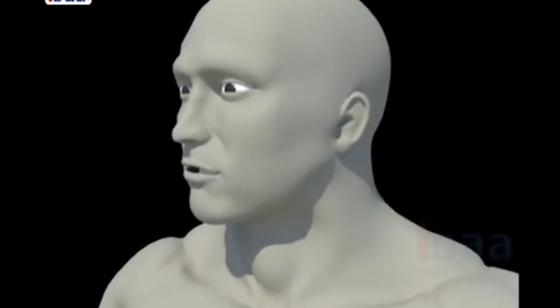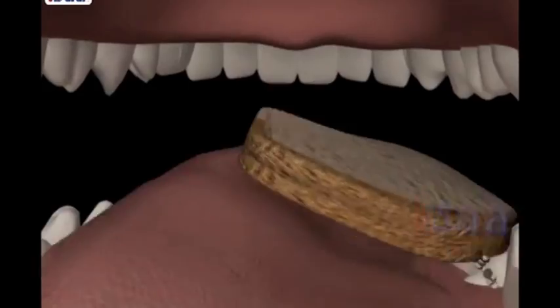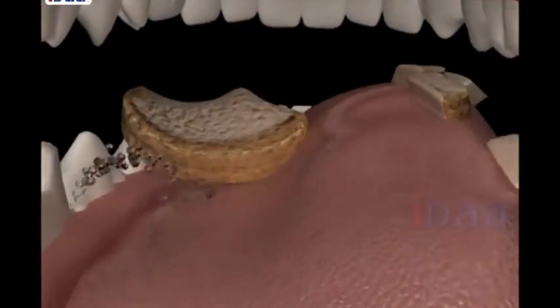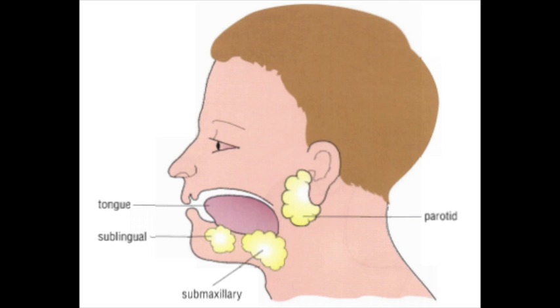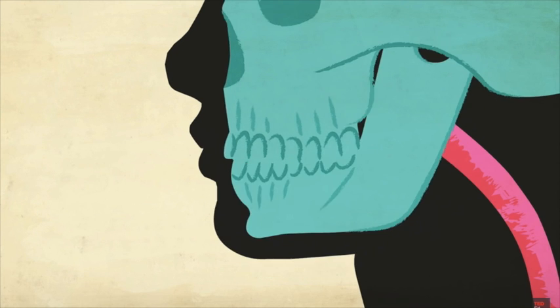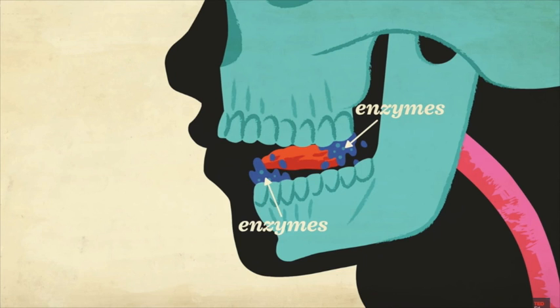When we take in food through the buccal cavity, the teeth mechanically break down the food into smaller bits. These bits are then mixed with saliva by the tongue. The saliva is produced by the salivary glands present in the mouth. This forms a moist lump known as bolus.